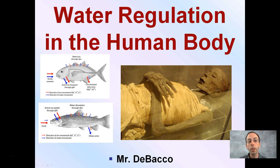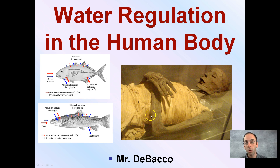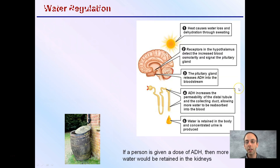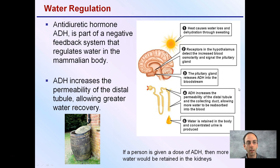Here we're going to look at water regulation in the human body. I have a separate video with osmoregulation relating to fish, but here we're focusing on the human body. This is an extreme case of water dehydration in the case of the mummy. Anti-diuretic hormone, ADH, is part of a negative feedback system that regulates water in the mammalian body.